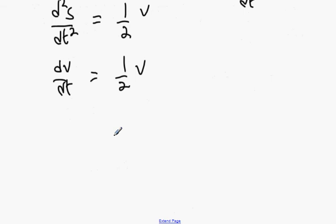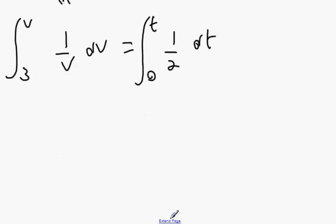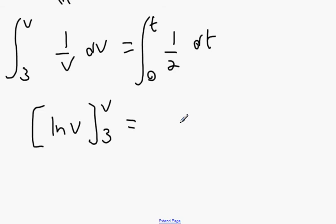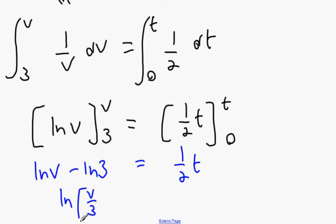So dV/dT equals a half V. Cross multiply and bring it down. We're going to get dV over V equals a half dT. Integrate both sides with lower limits 0 and 3, upper limits V and T. We should get ln V from V to 3 equals a half T from T to 0. So ln V minus ln 3 equals a half T, giving ln(V/3) equals a half T.